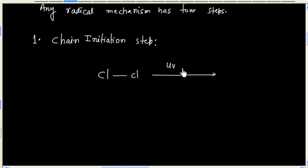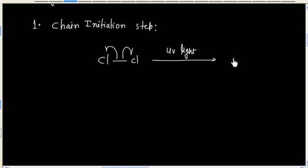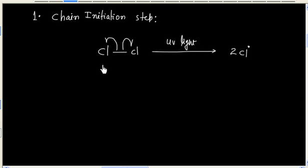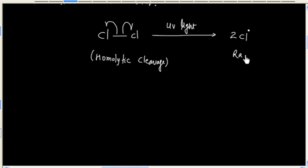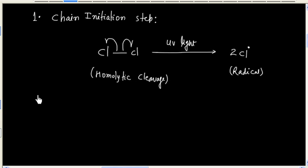In the presence of UV light, the chlorine-chlorine bond dissociates and we generate a chlorine atom. This is a homolytic cleavage, so we have a radical. That is why this step is also called the radical generation step.